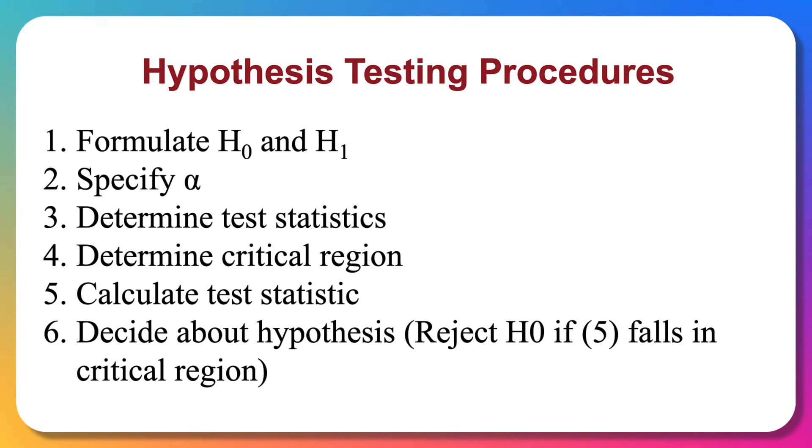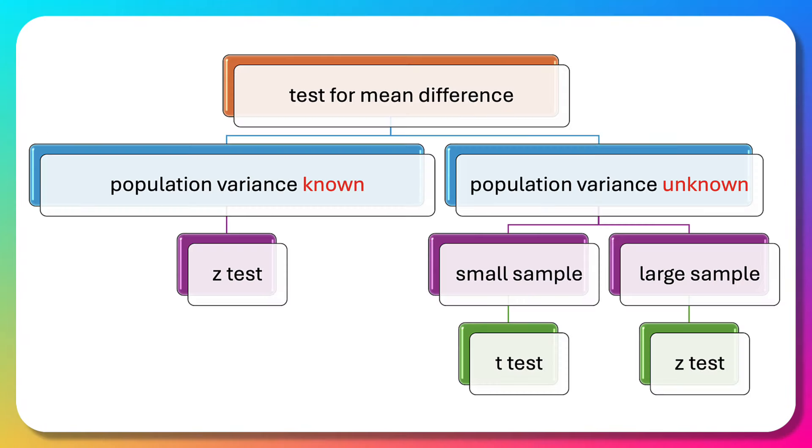Hypothesis testing follows these basic procedures: First, formulate the null hypothesis H0 and alternative hypothesis H1. Second, specify the level of significance alpha. Third, determine the test statistic. Fourth, determine the critical region. Fifth, calculate the test statistic. Sixth, decide about the hypothesis by rejecting H0 if the test statistic falls in the critical region. This is for testing mean difference.